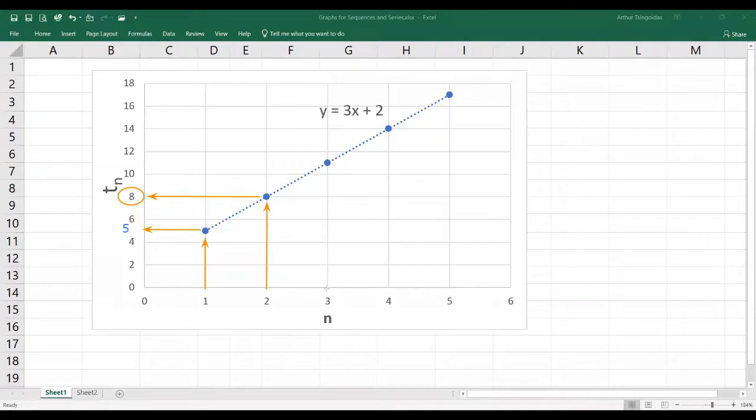When n equals 3, the value of that third term is 11. And what you have there are the terms of an arithmetic sequence.